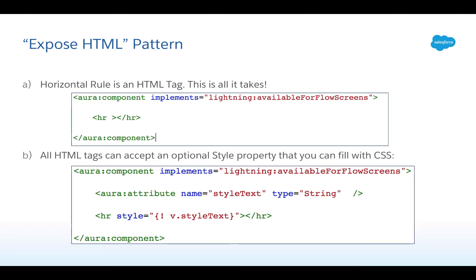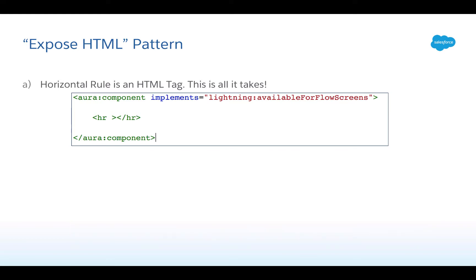So we're going to be a little more clever though. If we just did this, it would not be red — there would be no way to make it red. What we want to do is add a little flair. We want to let the person adding the horizontal rule set the color, size, and thickness. We basically want to let them style this HTML.